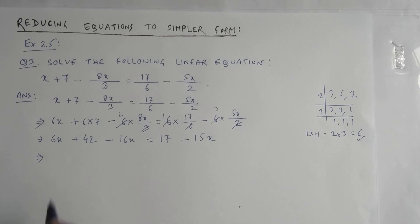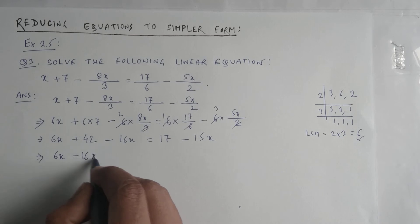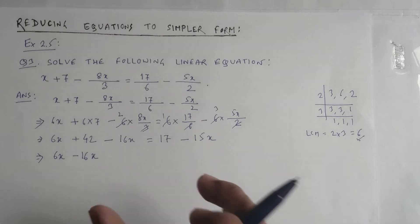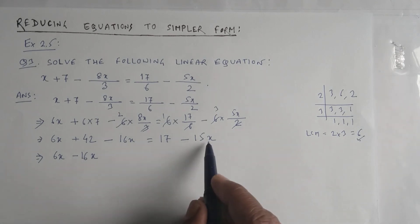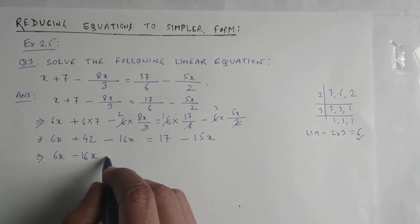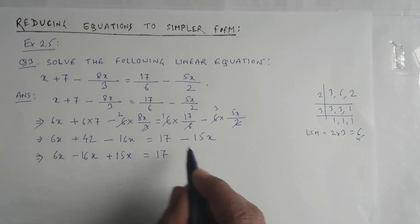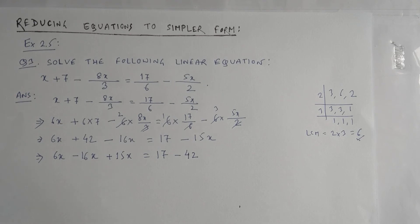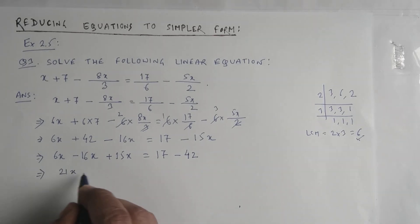This is now like the equations from Exercise 2.4. We move the variable terms to one side and the constant numbers to the other side using transposition. So 6x and minus 16x stay on the left; minus 15x moves to the left as plus 15x. On the right, 17 stays and 42 moves to the right side as minus 42.